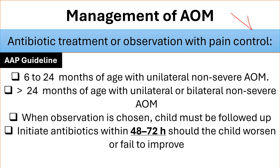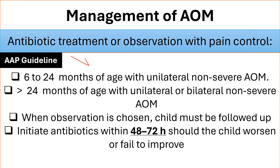There are two options: either start antibiotic treatment or wait and do observation with pain control. For example, if the child is between 6 months and 24 months of age with unilateral non-severe acute otitis media, or older than 2 years with unilateral or bilateral non-severe acute otitis media, you may choose observation. If you choose observation with pain control, you must follow the child within 48 to 72 hours.